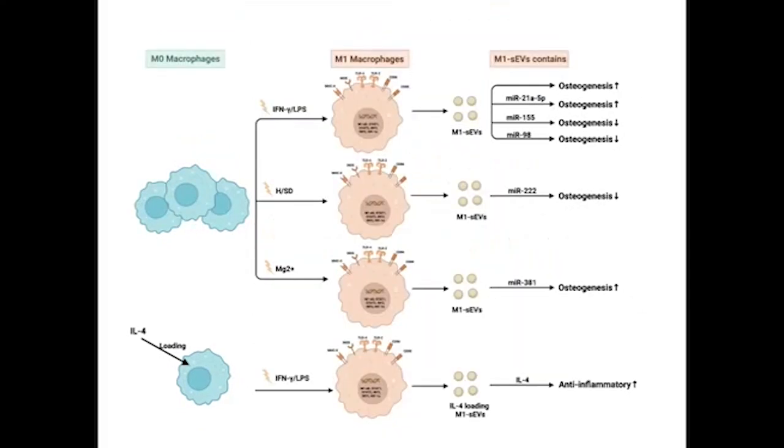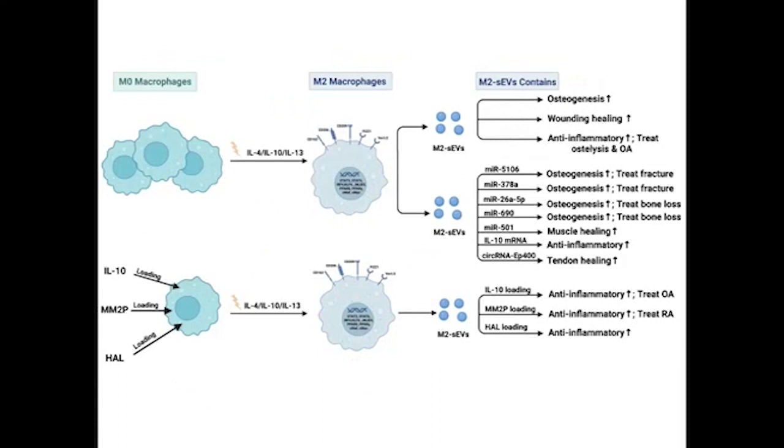Extracellular vesicles produced by M1 macrophages are mainly involved in osteogenic differentiation and play an important role in the early stage of bone induction and bone regeneration.